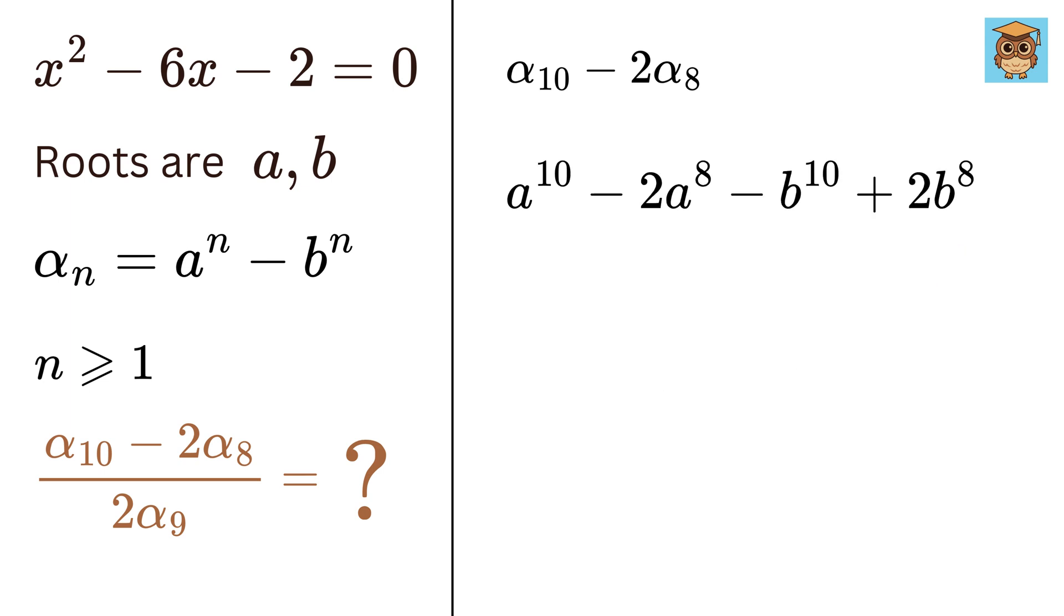Now we will take a^8 common from this, and we get a^8(a² - 2). And from this, we will take -b^8 common to get -b^8(b² - 2).